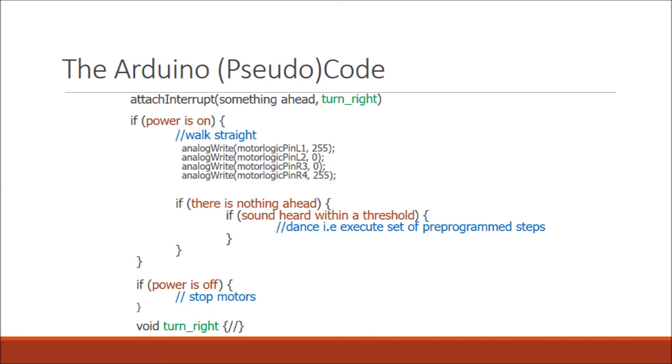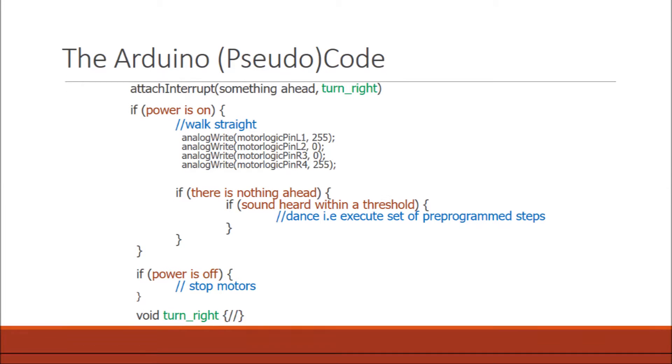This is the skeleton of the microcontroller code. If the IR sensor does not detect anything ahead, the bot keeps walking straight. If a sound is heard, the code goes into a different set of motor commands. If there is something ahead of the robot, then an attach interrupt executes a right-turn method.